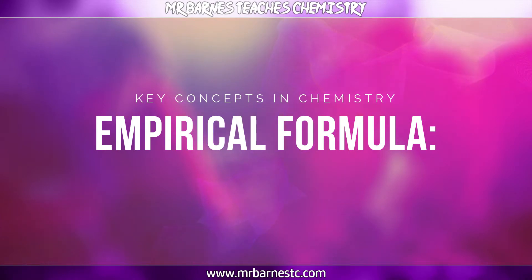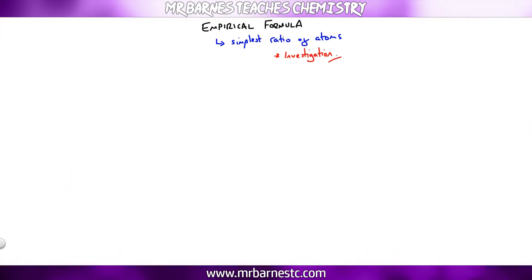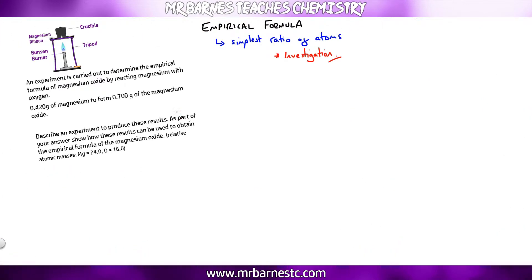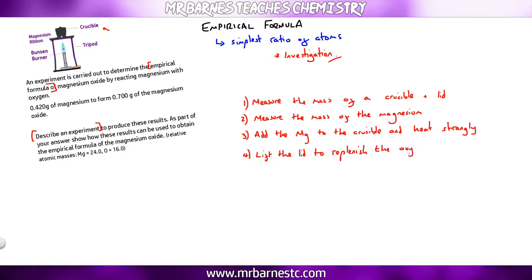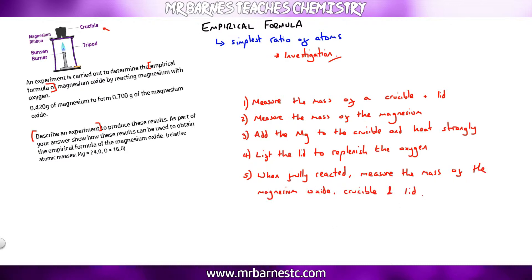The third part of the empirical formula section is investigating it experimentally — for example, determining the empirical formula of magnesium oxide. First, measure the mass of the crucible and lid. Then measure the mass of the magnesium and add it to the crucible and heat strongly. During the reaction, lift the lid to replenish oxygen. When fully reacted to white powder, remeasure the mass of the magnesium oxide, crucible, and lid, then subtract the mass of the crucible and lid to find the mass of magnesium oxide.